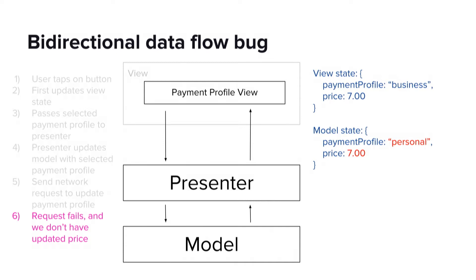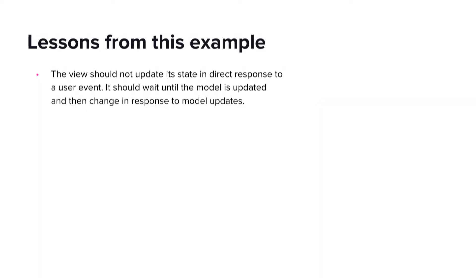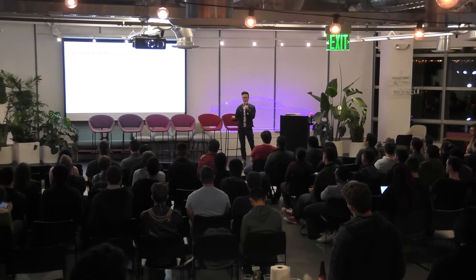This bug leads us to a few lessons. One is that the view should not update itself in direct response to a user input event. Instead, it should do some kind of action to update the model as the single source of truth. And when the single source of truth changes, the view should update in response. We also learned that we need some kind of architecture that is flexible enough to add an asynchronous operation in response to any user input event. We shouldn't have to re-architect our entire feature when product requirements change — we should use an architecture that is flexible.